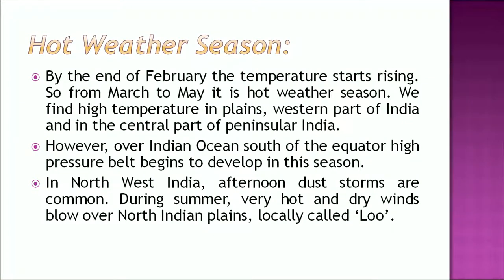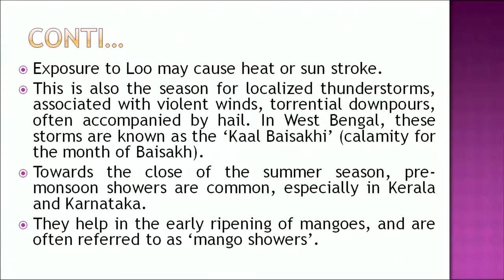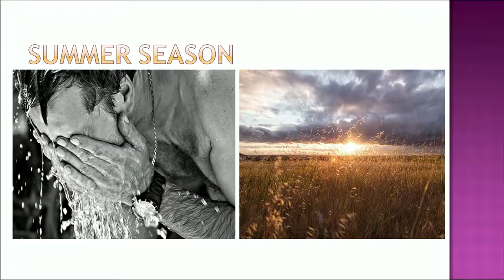By the end of February, the temperature starts rising, so from March to May it is the hot weather season. We find high temperature in plains, the western part of India, and in the central part of Peninsular India. In northwest India, afternoon dust storms are common. During summer, very hot and dry winds blow over north Indian plains, which are locally called 'loo' — exposure to loo may cause heat or sunstroke. This is also the season for localized thunderstorms with violent winds and torrential downpours often accompanied by hail. In West Bengal, these storms are known as Kalboishakhi. Towards the close of summer, pre-monsoon showers called 'mango showers' help in the early ripening of mangoes, especially in Kerala and Karnataka.